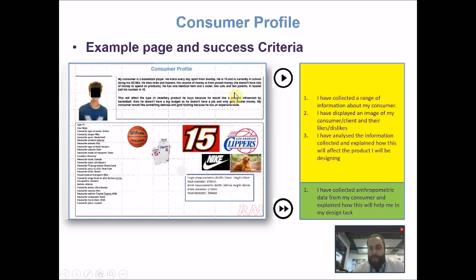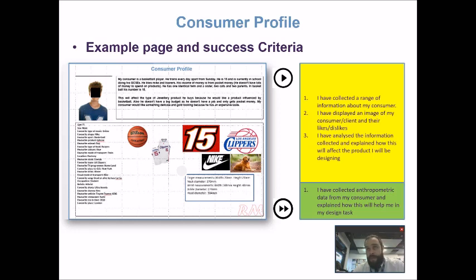The first thing we want to do is collect a range of information about the consumer. You can see here we've got a fairly generic list of points — the consumer's sex, age, and a series of interests. Key things to identify are the demographic: this includes age range, race, gender, income, marital status, educational background, and occupation — all the things that make up the demographic of that consumer or target market.